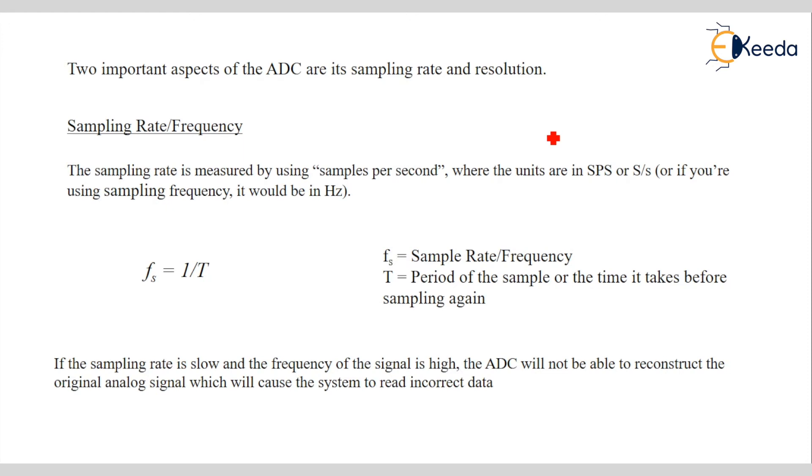If the sampling rate is low and the frequency of signal is high, the ADC will not able to reconstruct the original analog signal which will cause the system to read inaccurate data. See, in ADC it converts the analog or continuous signal into discrete signal. If the sampling rate is very low and frequency high, so what happen? The aliasing may take place.